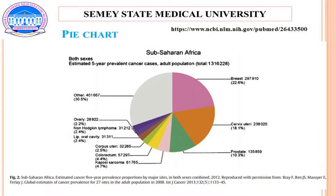A pie chart is a circular statistical graphic which is divided into slices to illustrate numerical proportion. The given pie chart estimates cancer five-year prevalence proportions by major sites in sub-Saharan Africa in 2012 among adults.